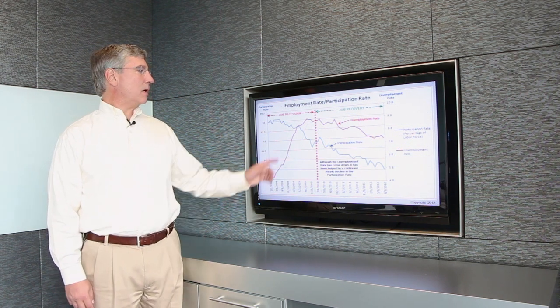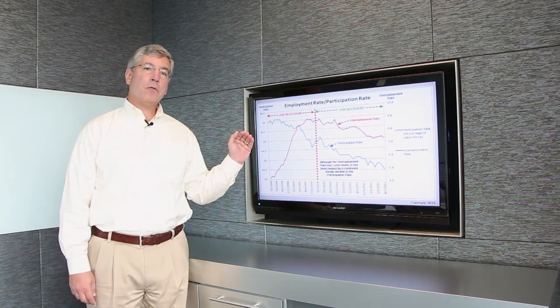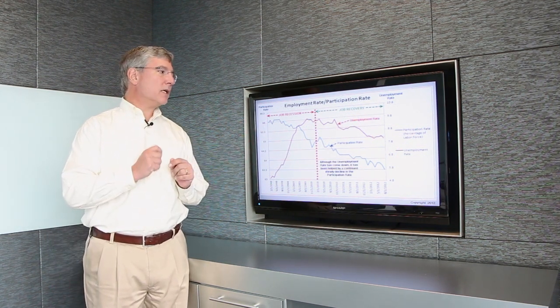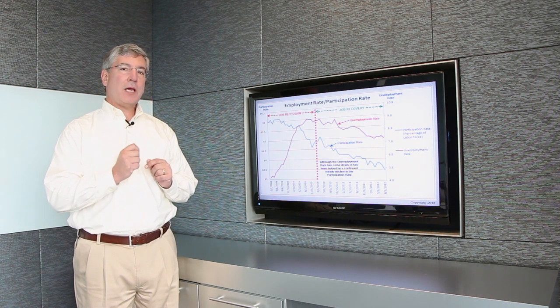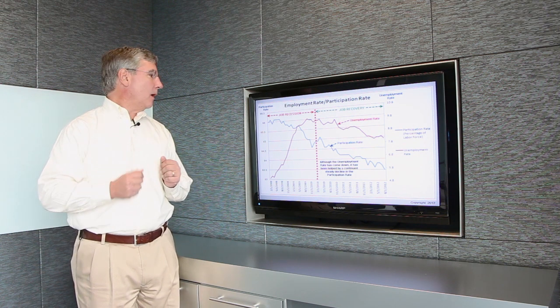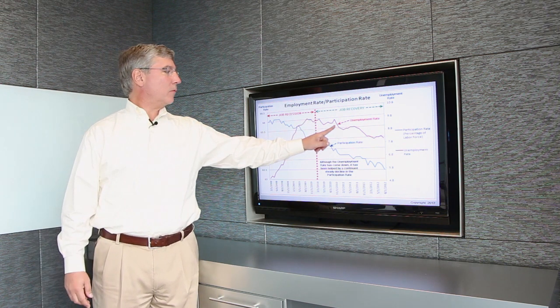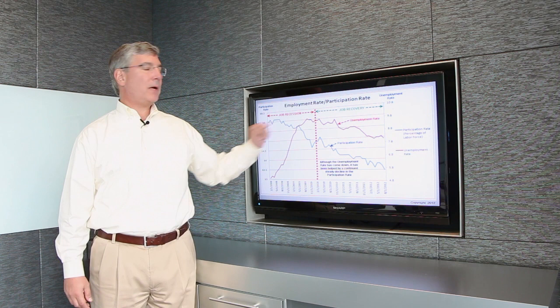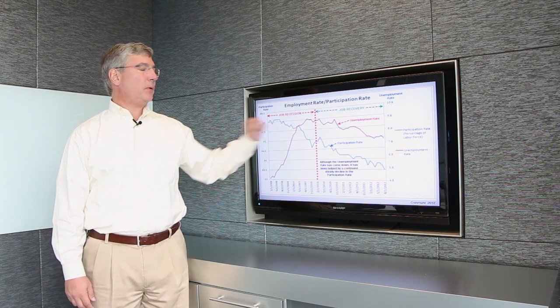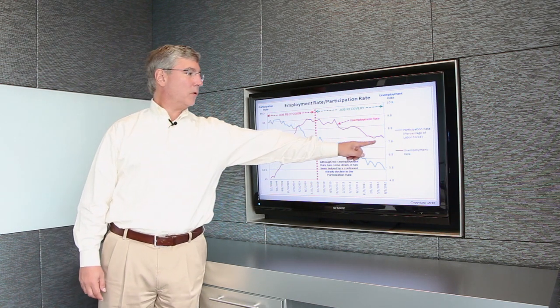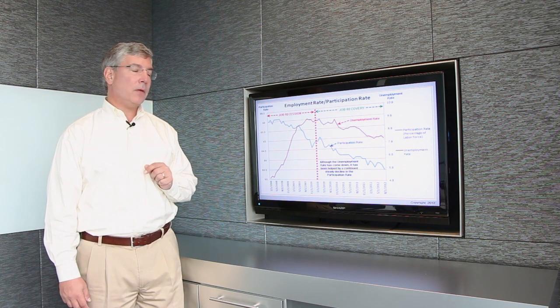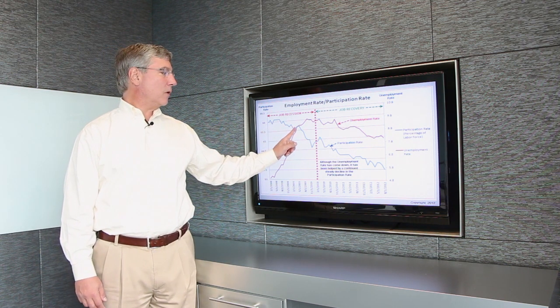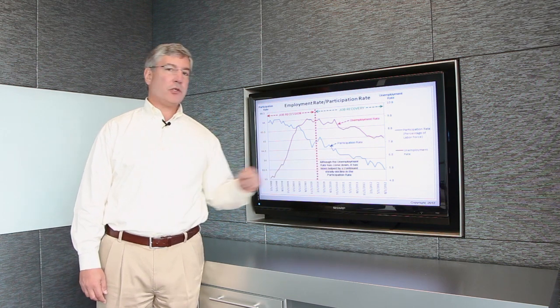This next slide is a representation of the employment rate and what is called the participation rate. The participation rate is a percentage of the labor force working. As you can see here, the unemployment rate has been steadily declining from about 10% at its peak. The unemployment rate has moved to a low of 8.1% over that time. But also over that time, what have we seen as far as the participation rate?